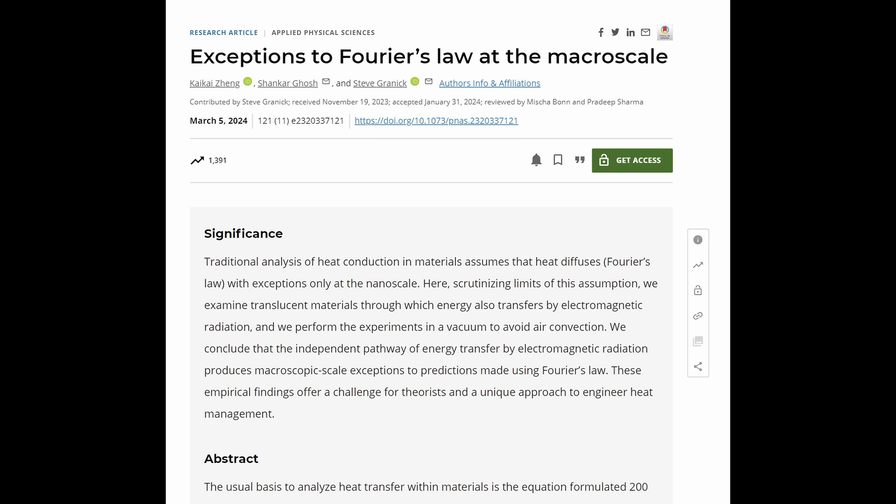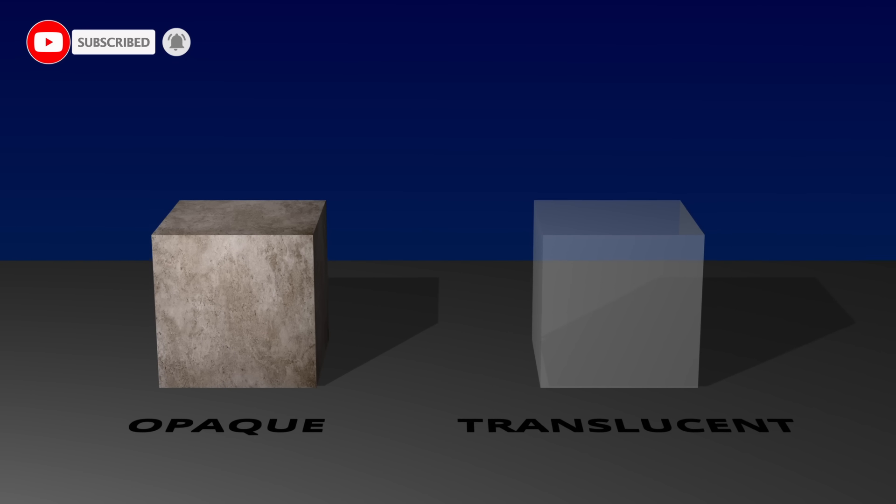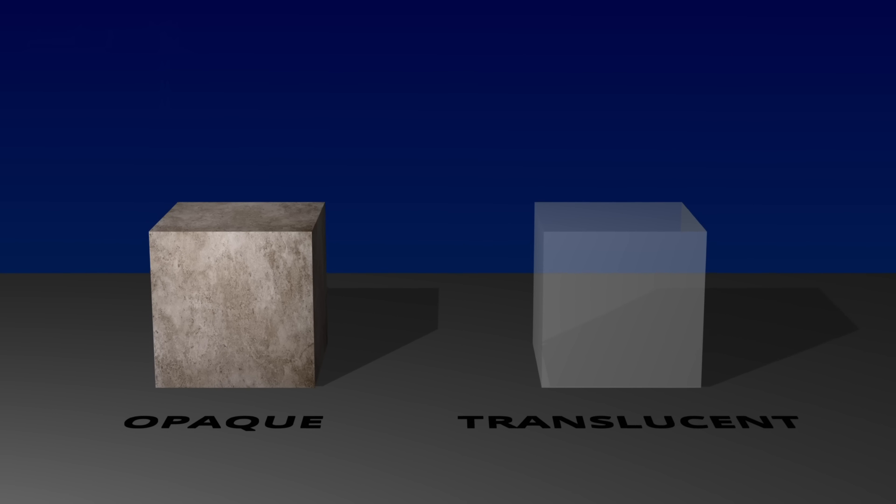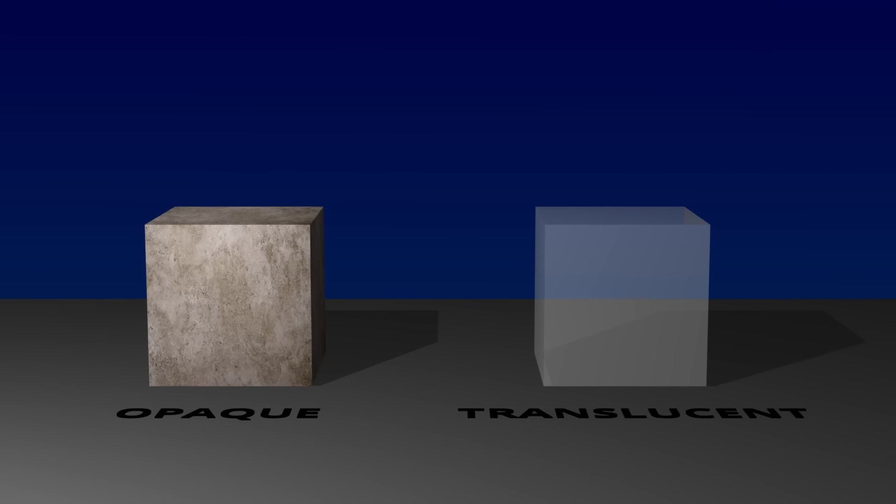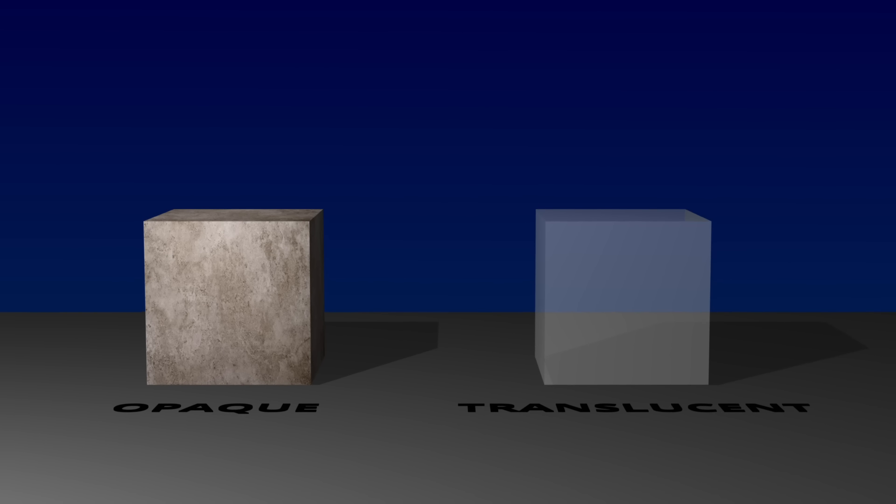A team of researchers sought to address a fundamental question regarding the applicability of Fourier's law of heat conduction in translucent materials. Specifically, they explored whether this law, which traditionally describes heat transfer solely through conduction in opaque solids, adequately explains heat transfer in materials that allow internal radiation.